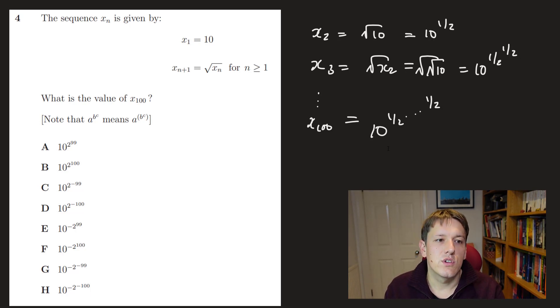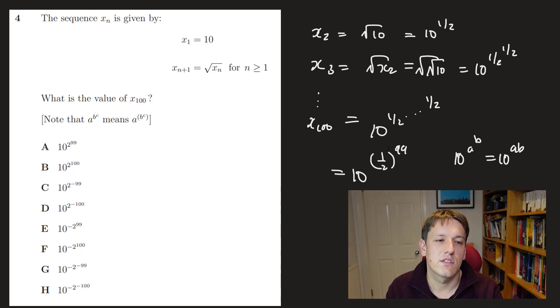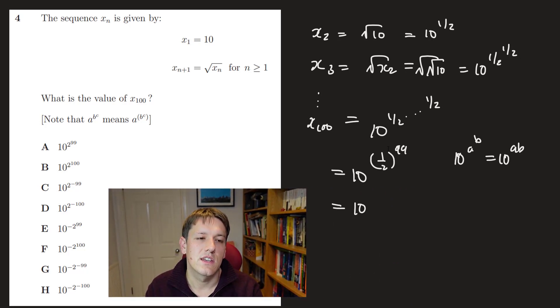So if I do 10^a to the b, that's 10^(ab). So actually, if I do this repeatedly 99 times, I'm going to get 10^(1/2) times itself 99 times, which is now, 1/2 is 2^(-1). So it's 2^(-1) to the 99. So it's 10^(2^(-99)). And that puts it into the form of the answer here, which is C.